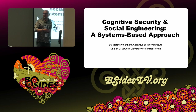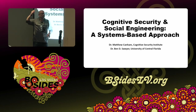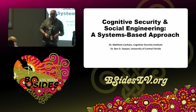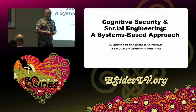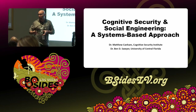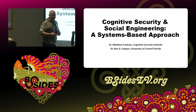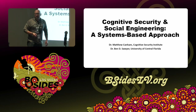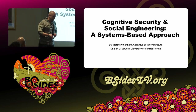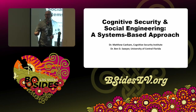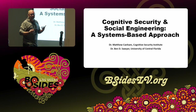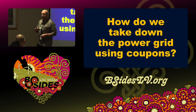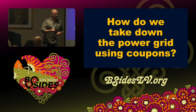I don't know if any of you have had a chance to stop by the booth, but we actually have a table at the middle ground area for the Cognitive Security Institute. I'll give a little plug for it at the end. Something I'd like to do today in the course of the talk is sort of define what cognitive security is from my perspective, because there's not really a clear definition of it at this point in time. What I want to start out with is the question: how can we crash the power grid with coupons? Because this is useful.